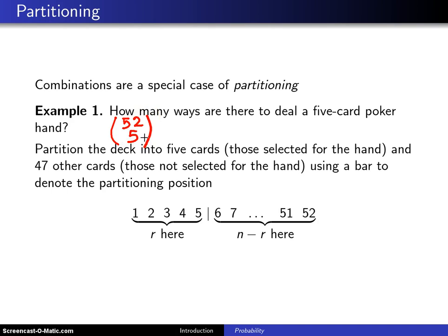But here is a different way of thinking of that same problem. If you partition the deck into five cards, those that are selected for the poker hand, and the 47 other cards that are still remaining in the deck that are not selected for the poker hand.